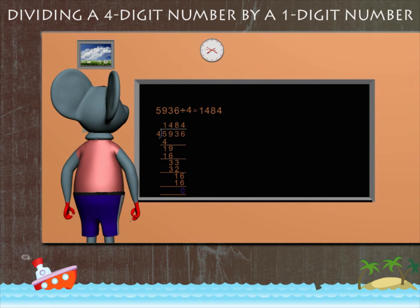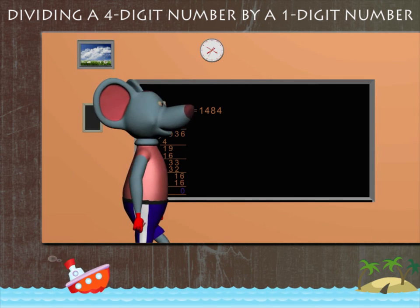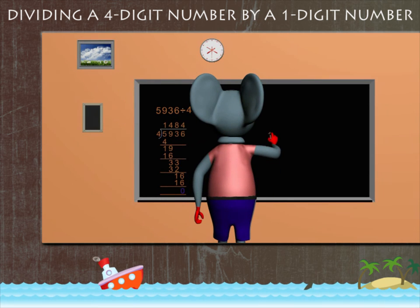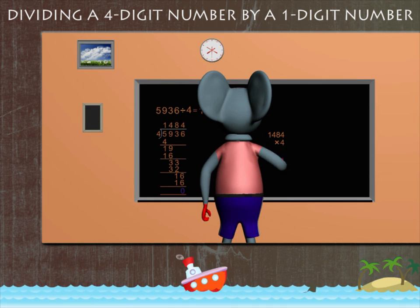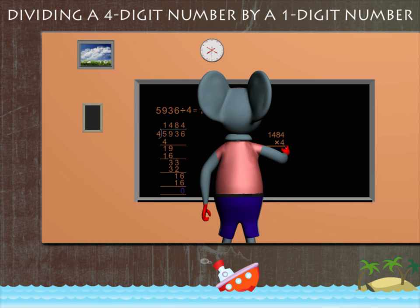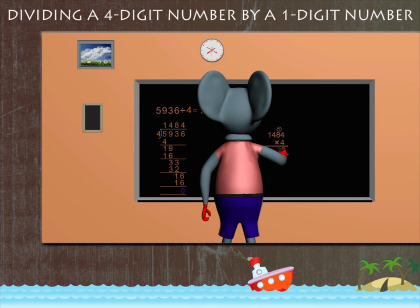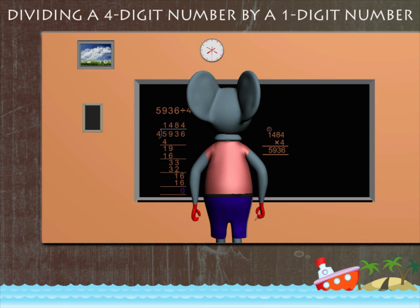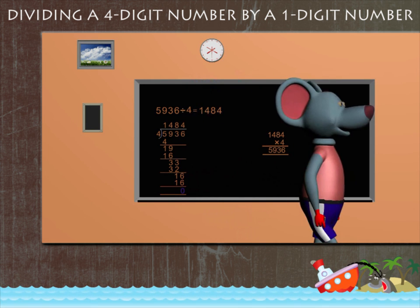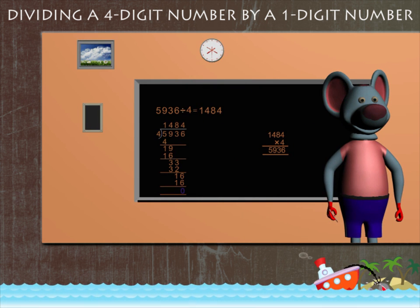The answer is 1484. Robbie now cross-checks his answer. He multiplies 1484 by 4. Robbie has got 5936, the dividend of his first question. You are absolutely right, Robbie!